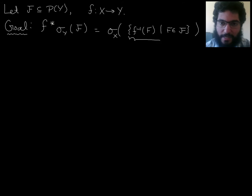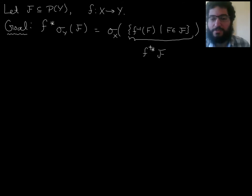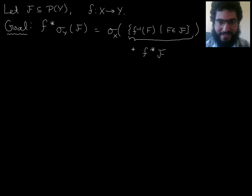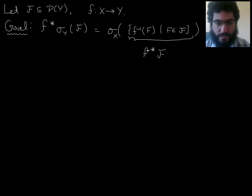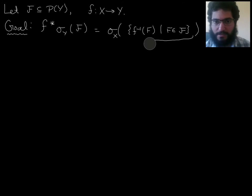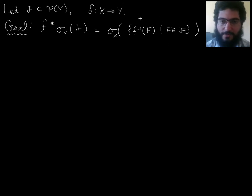You might have expected me to write this as the pullback of f, which I think is perfectly reasonable — if you want to write it that way, that's fine. Then what we're trying to prove looks even nicer: the pullback of the sigma algebra generated by a set equals the sigma algebra generated by the pullback. So we're showing that these two symbols commute in some sense. But I'm not using this notation; I'm going to write this out explicitly. My reasoning is that I want to only write pullback of something when that something is a sigma algebra. Here I'm just pulling back a collection of sets — not something I need a special notation for.